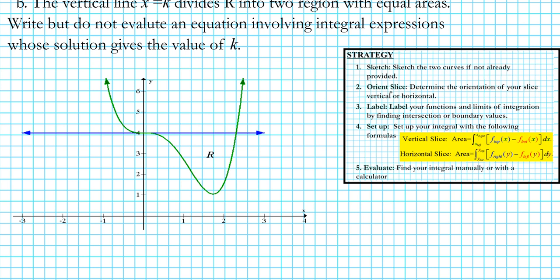Next we're going to orient our slice. Do we want to slice horizontally or vertically? We want to slice in a direction that ensures we are not intersecting a function more than once. If we slice horizontally, we'll be intersecting the green function more than once, which could be problematic. So the smart strategy here is to slice this region vertically — up and down. That's the orientation of our slice.